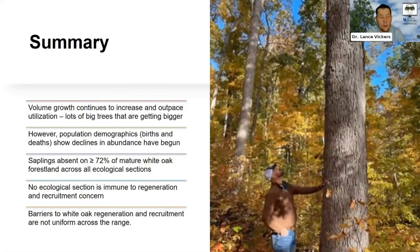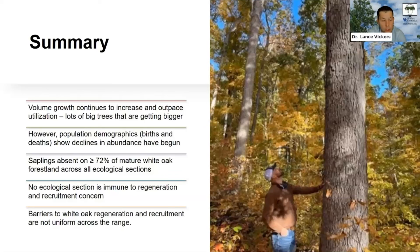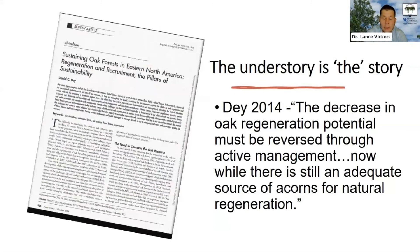To summarize, across the range and in each specific region we looked at, standing volume continues to increase and outpace utilization — we've got lots of big trees that are getting bigger. However, looking at total population demographics in terms of number of trees, we're starting to see declines in abundance. Saplings are absent on about three-quarters of all mature White Oak acres in all of those regions, meaning no ecological section is immune to regeneration or recruitment concerns. The understory is really the story here — it's all about the lack of regeneration and the failure to get seedlings to move into larger size classes.